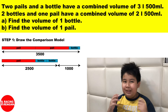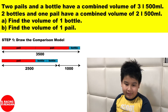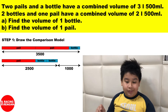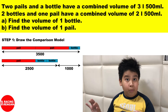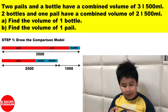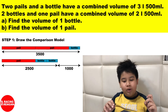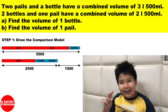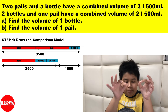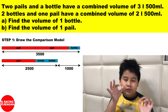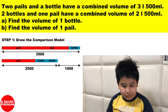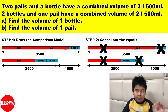Draw another comparison model with one pill and two bottles, and label it 2500. By the way, do not draw the second model in a different place — draw it below the first model. That way it's easier to make the comparison.